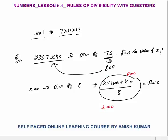x can be 0 (since 0×100 = 0, divisible by 8). x can't be 1 (100 is not divisible by 8). x can be 2 (200 is divisible by 8). x can't be 3. So the possible values of x where x×100 is divisible by 8 are 0, 2, 4, 6, and 8. These are the 5 possible values from the divisibility-by-8 condition.